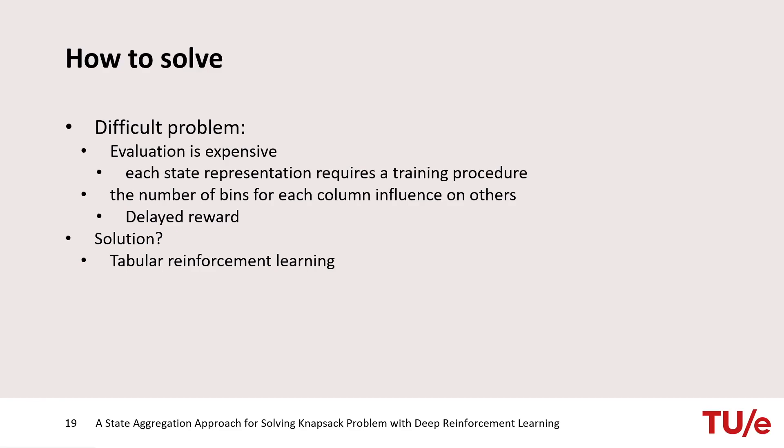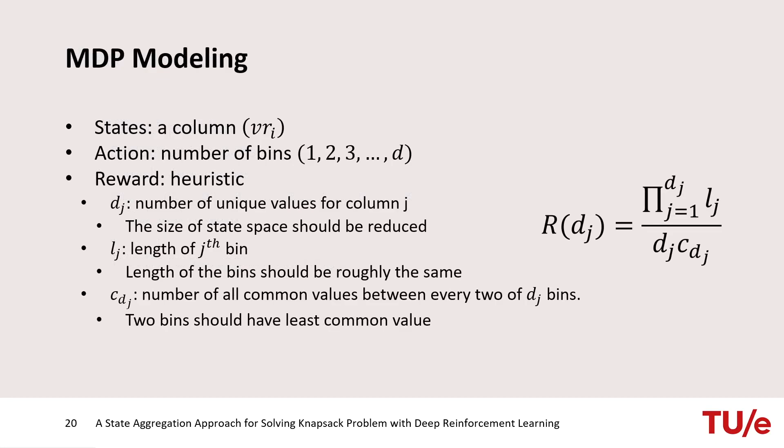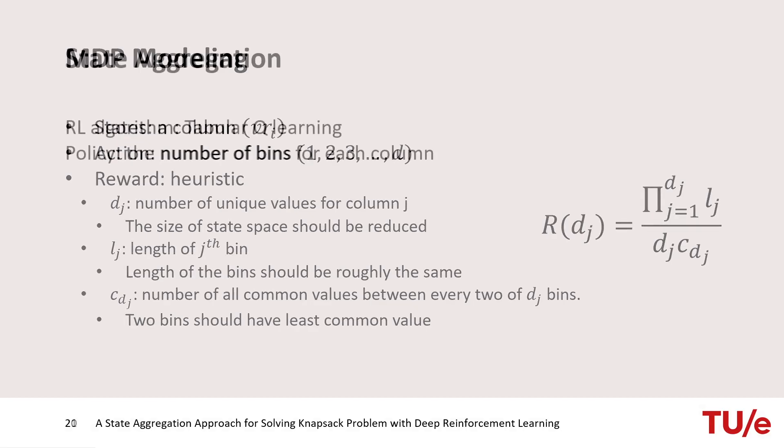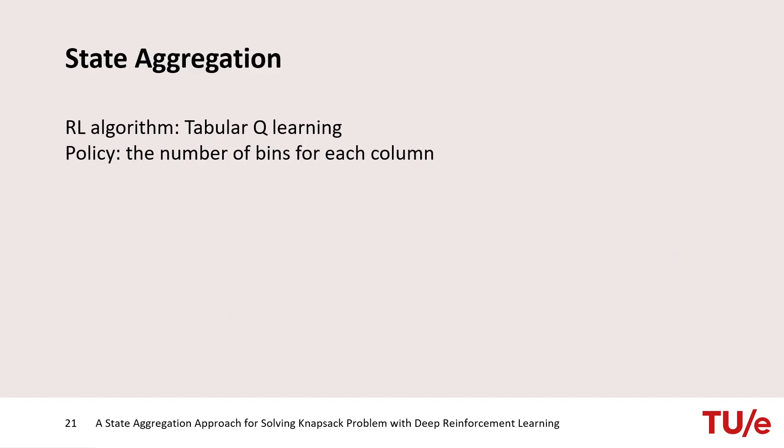This is a difficult problem and the evaluation is very expensive because the learning should be done for each state representation and then we can figure out what is the performance of this state representation. The reward is also delayed because the number of bins of each column influences the number of other columns. Hence, in order to solve this problem, we use tabular reinforcement learning. In this modeling, states are columns and an action is the number of bins for that column. Reward consists of three terms. First, the size of state space should be reduced. Second, it's preferred to have bins with almost the same length. Third, the number of common values between two bins should be reduced. Tabular Q-learning is used for solving this problem and the final policy determines the number of bins for each column.